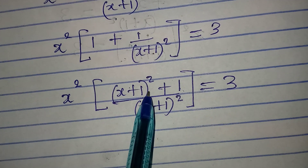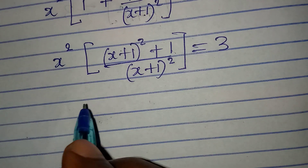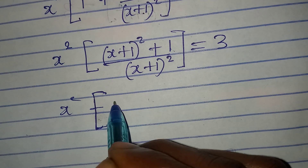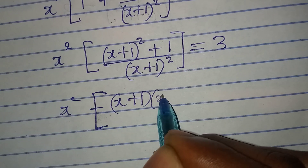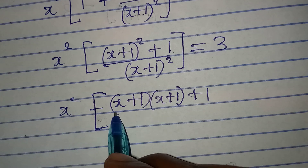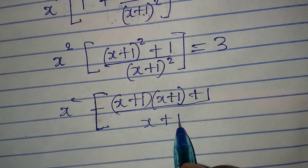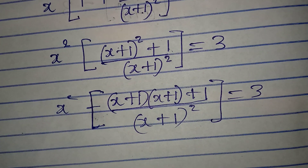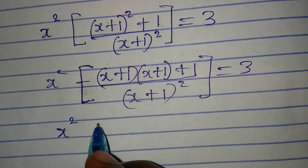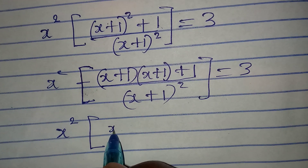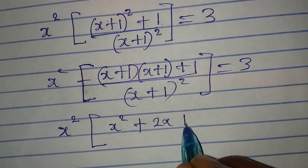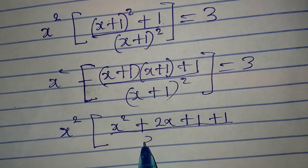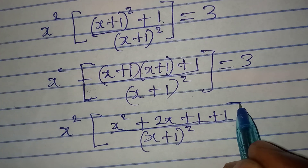The next thing I'm going to do is open the brackets at the numerator. So I have x squared, open brackets, and here we have x plus one in two places — x plus one times x plus one — then plus one. The whole of this is over x plus one squared, and this is equal to three. Now if you expand x plus one squared you get x squared plus two x plus one, then the plus one outside still appears, giving plus another one.